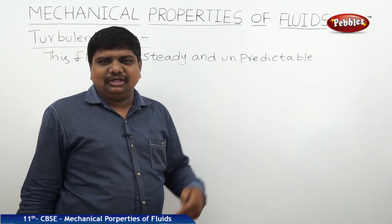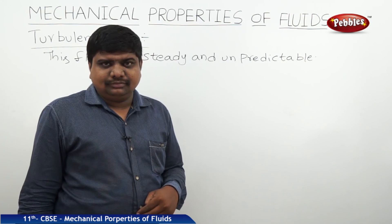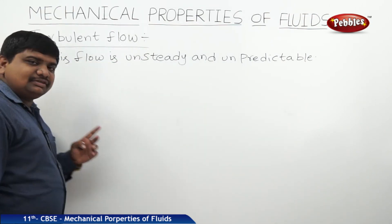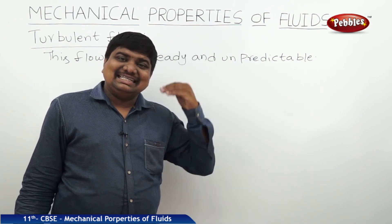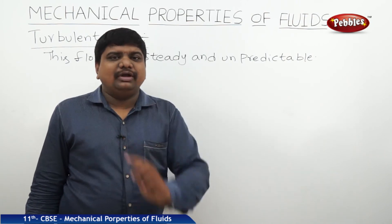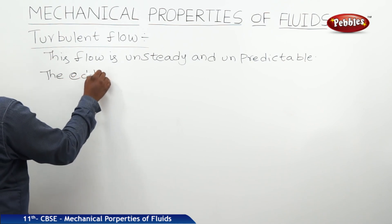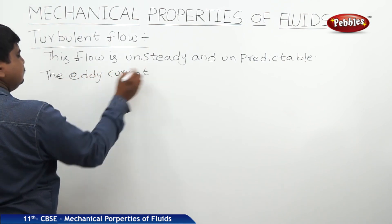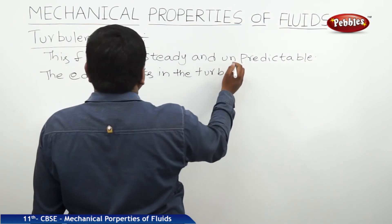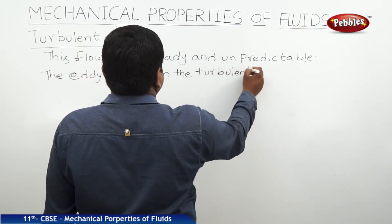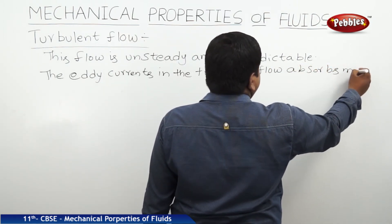In turbulent flow, a lot of eddy currents are produced by each molecule of the water. These eddy currents absorb more energy. The frictional force experienced by each molecule in turbulent flow is much greater than in streamline flow.